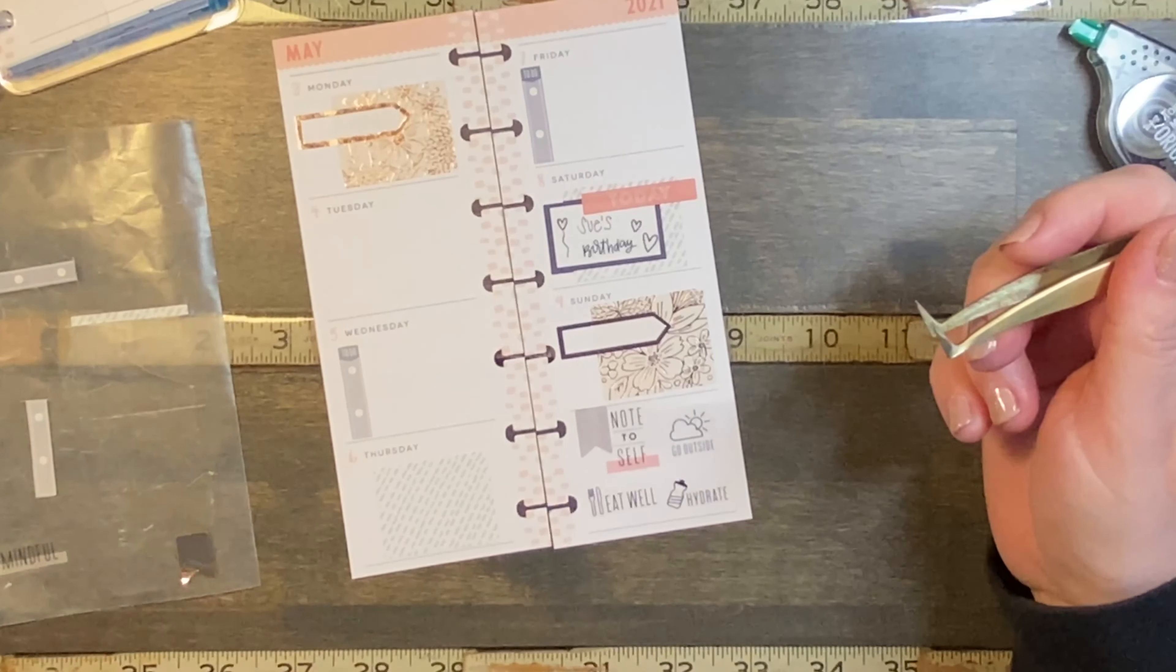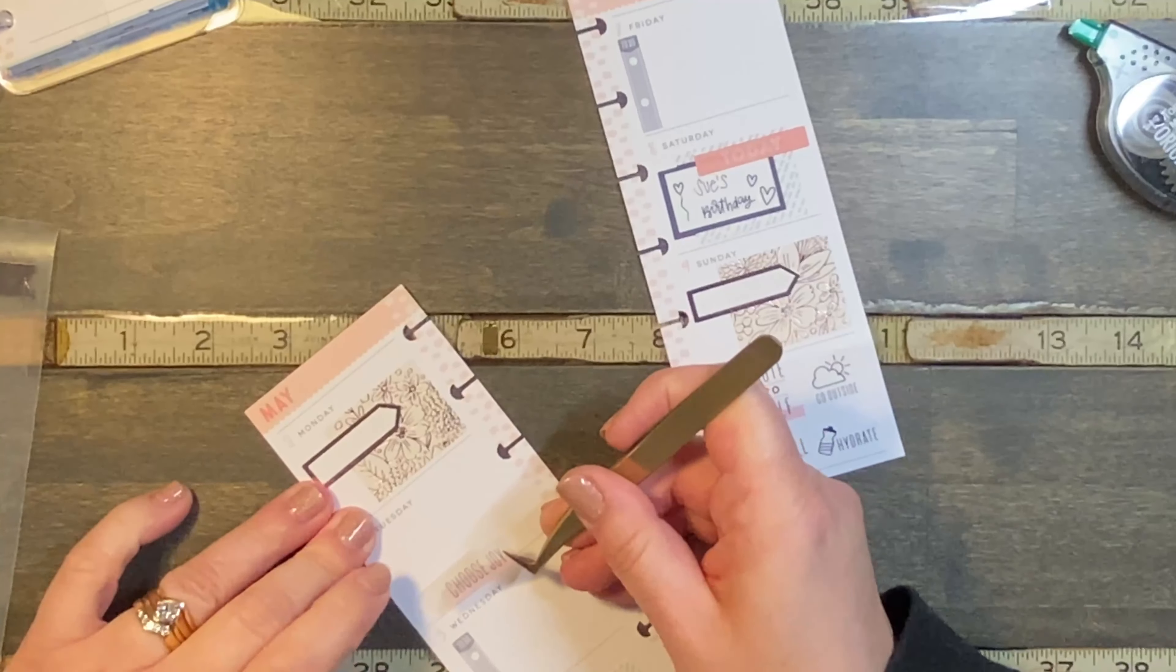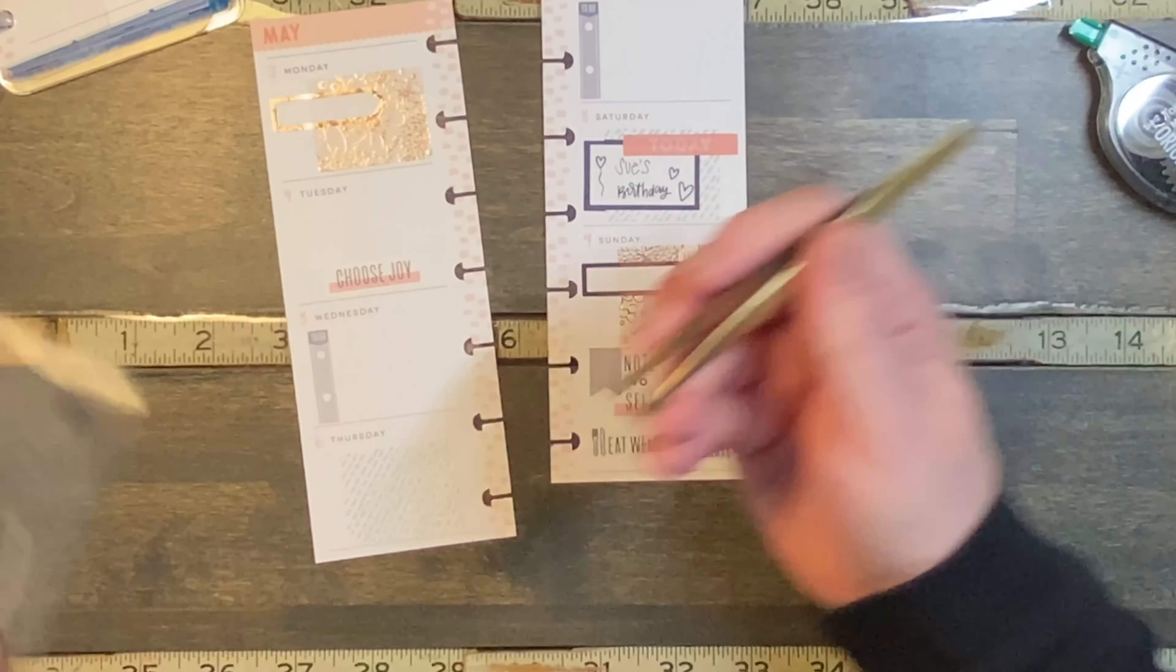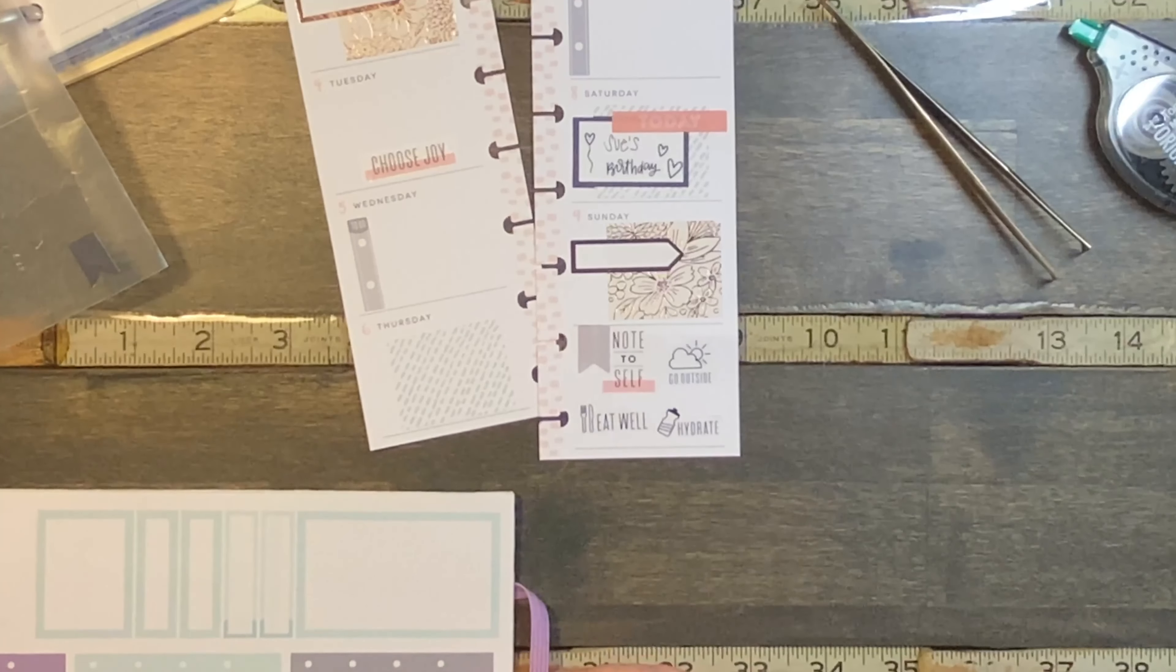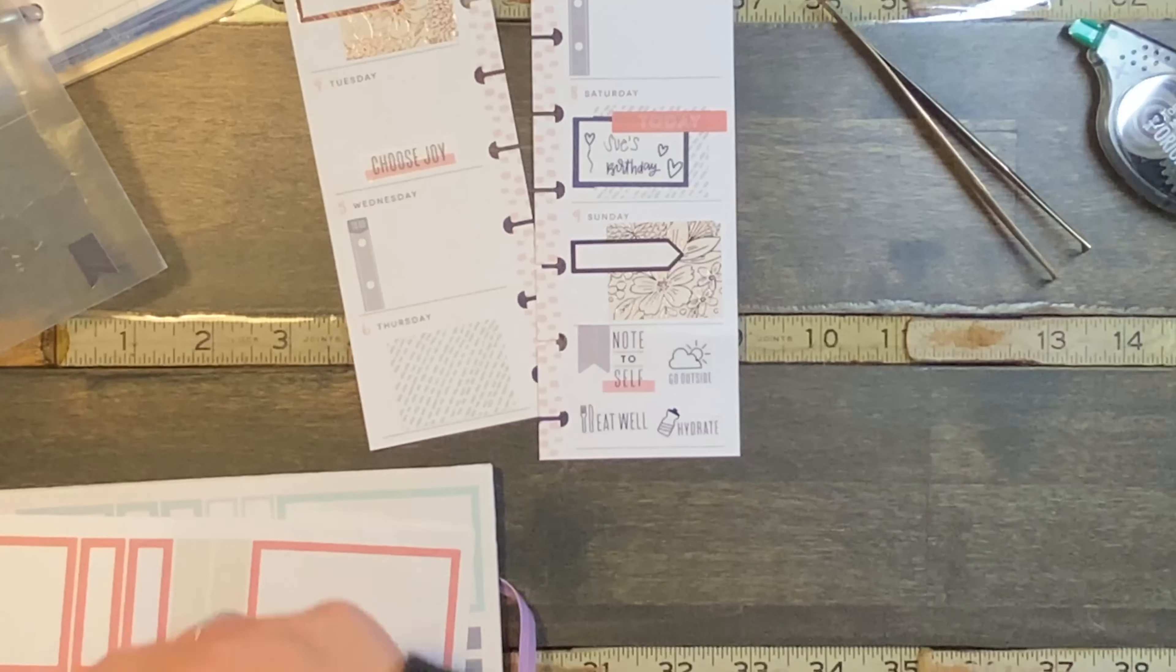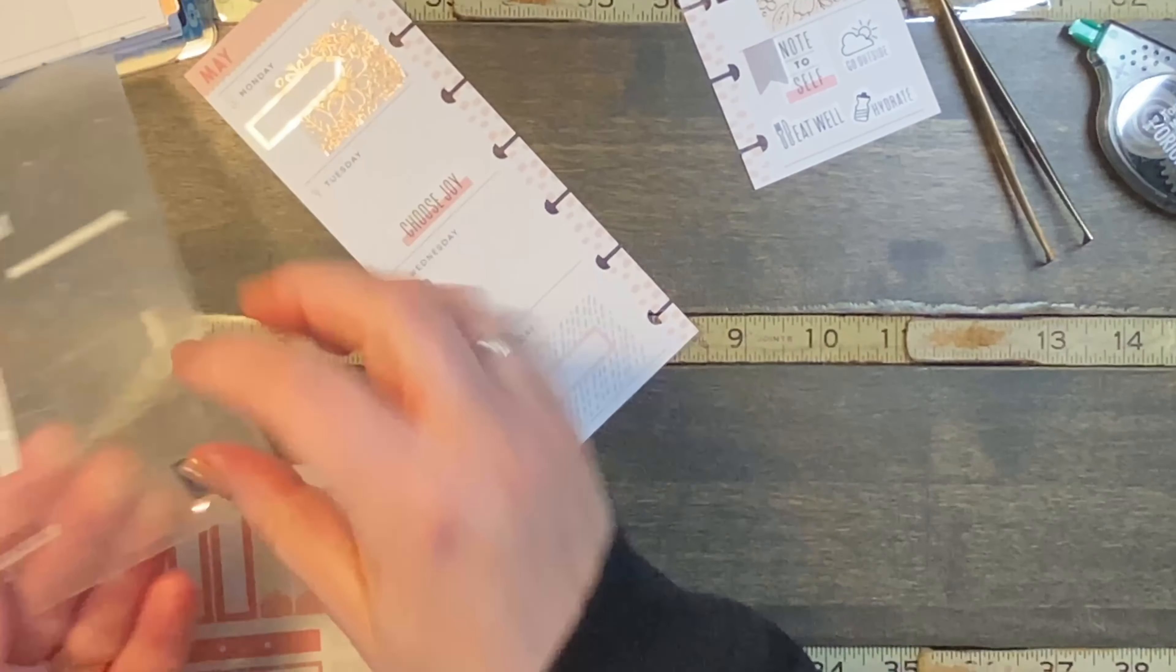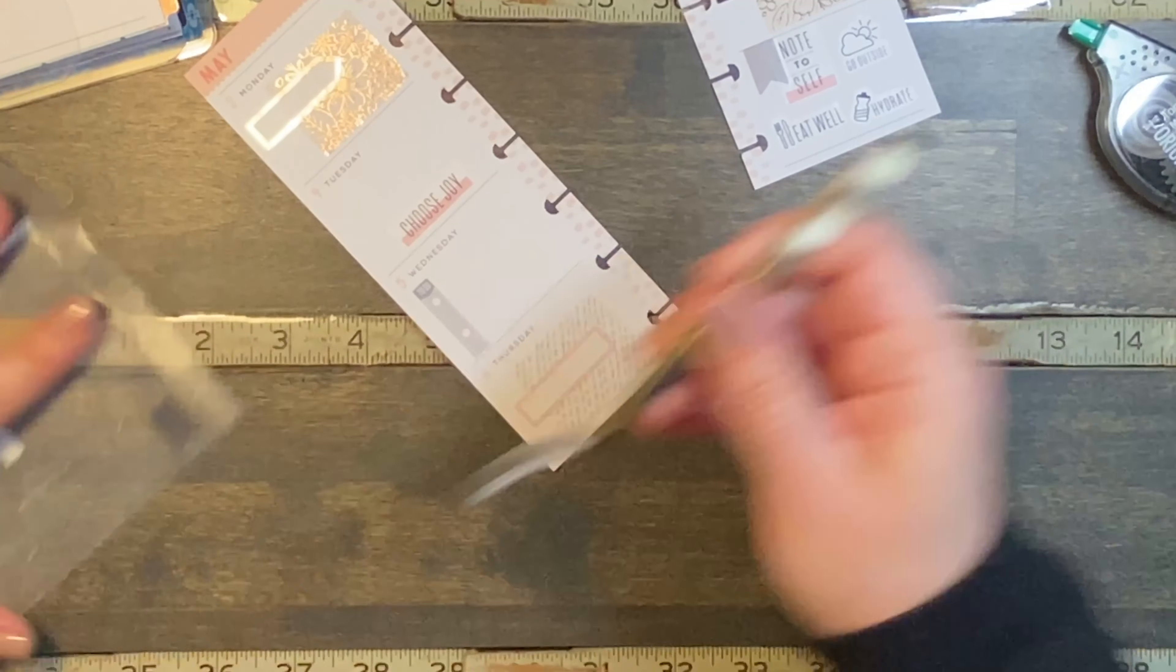Now I do have a be mindful and a choose joy. So we're going to stick the choose joy over here. Since there's nothing on Tuesday, I think I'm going to stick it down to the bottom, and then maybe we'll add some bullet points or something. And then we have the be mindful. I did see some boxes in here real quick, and I have that flag too. So we've got purple, green, peach. We'll stick this down here like this so we can still write on this day, and then stick the be mindful right on here. There we go.